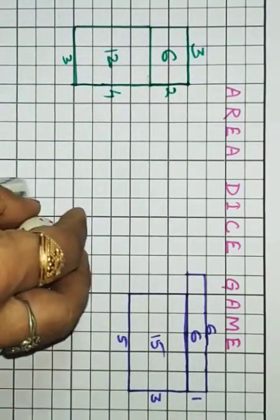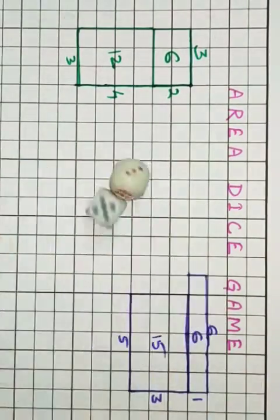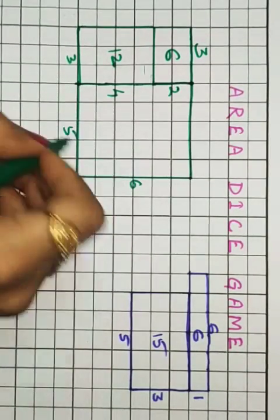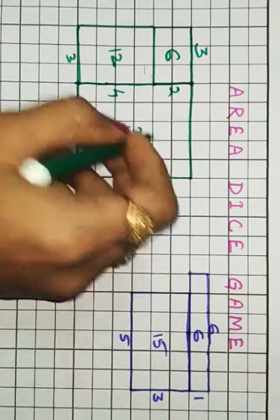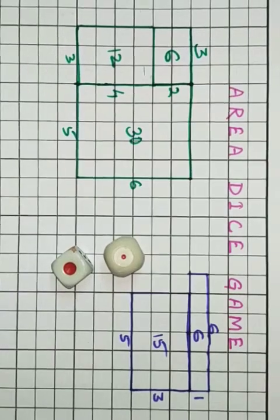Let's give the next chance to the green one. We will roll it down, six and five. This is six and this is five. Six times five equals thirty. Here comes thirty. Let's give a chance to the blue one. This is the third and final chance.